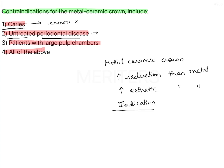Patients with a large pulp chamber is specifically a contraindication of metal ceramic crown because it requires more reduction than metal. So it is not indicated in cases with large pulp chambers. Which of the following are contraindications for metal ceramic crown? Technically all of them.